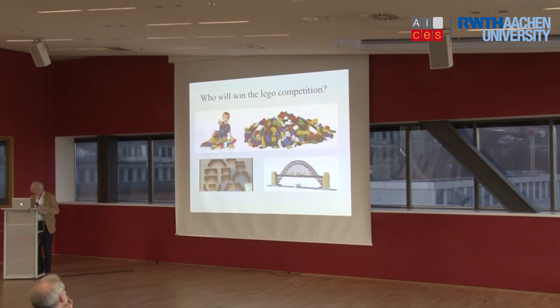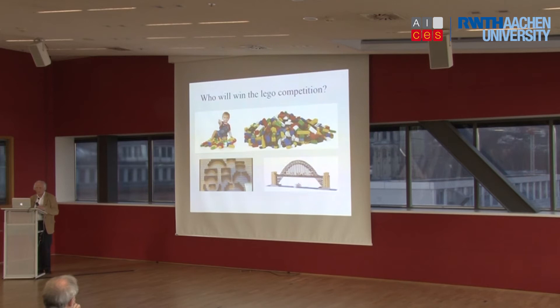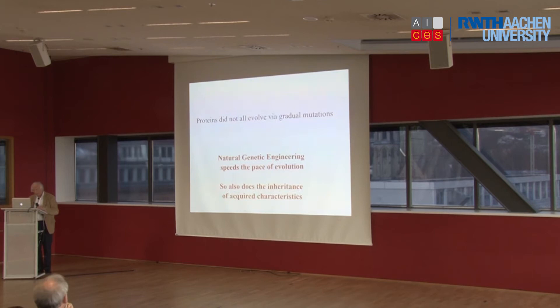Now we come to the speed-up of evolution. If you give two children a set of Lego bricks and ask them to build a bridge — to the first child you give the original tiny Lego pieces, but to the other you give preformed architectural pieces which can also be incorporated into Lego — who will get to building the bridge first? It's blindingly obvious that the child with preformed structures will get there first. I'm suggesting, as James Shapiro does in his book, that evolution has used precisely this process to speed things up. Natural genetic engineering, I would suggest, speeds up the pace of evolution.